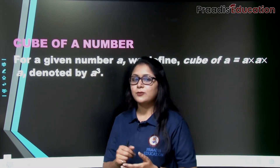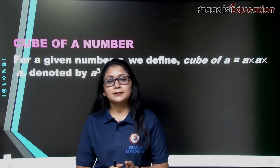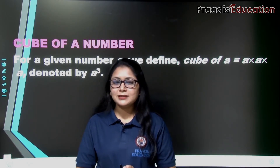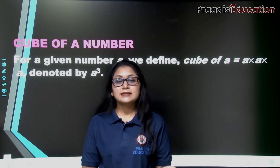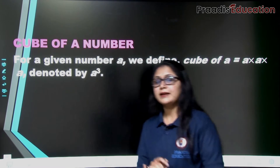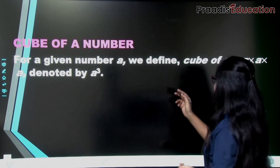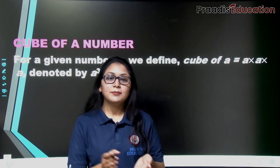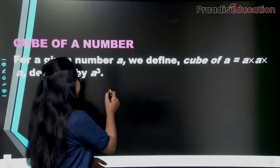Like we have learned in squares — when we multiply a by a, that is a square. We define cube of a as a multiplied by a multiplied by a. So if we take a number 'a', the cube of a equals a × a × a.